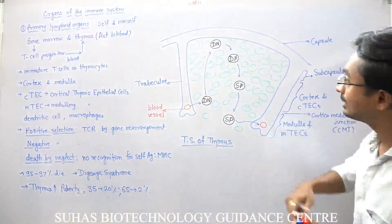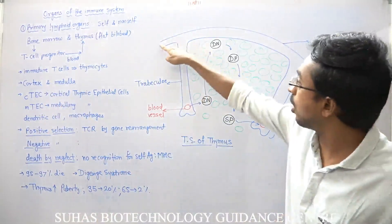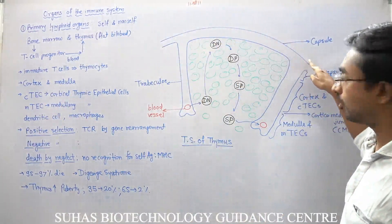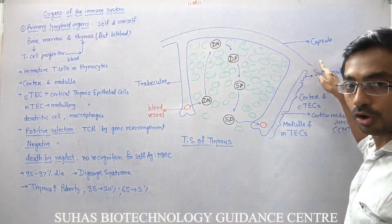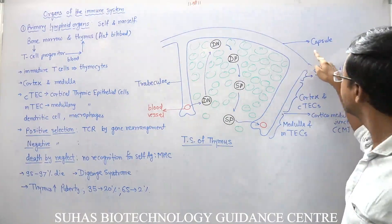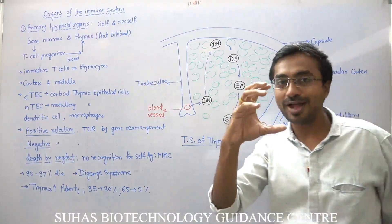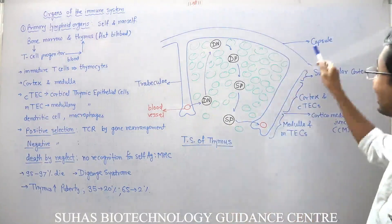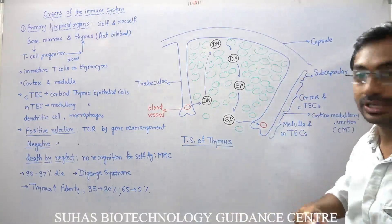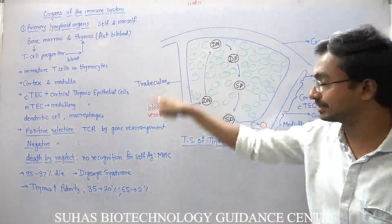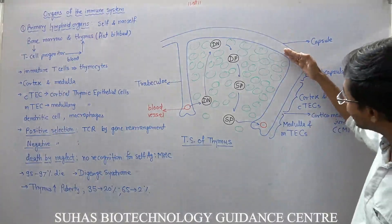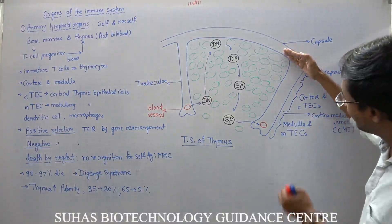On every important organ of our body there is a layer of fat, and we call that a capsule in the case of Thymus. So the cortex actually starts from this area.